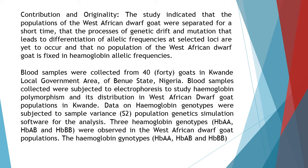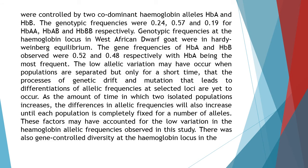Three hemoglobin genotypes — HBAA, HBAB, and HBBB — were observed in the West African Dwarf Goat populations. These hemoglobin genotypes were controlled by two co-dominant hemoglobin alleles HBA and HBB. The genotypic frequencies were 0.24, 0.57, and 0.19 for HBAA, HBAB, and HBBB respectively. Genotypic frequencies at the hemoglobin locus in West African Dwarf Goat were in Hardy-Weinberg equilibrium.